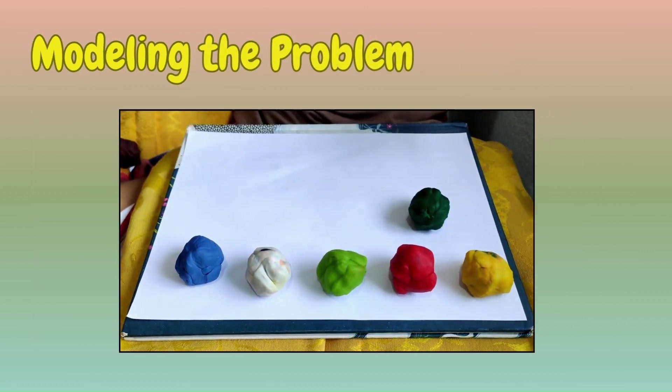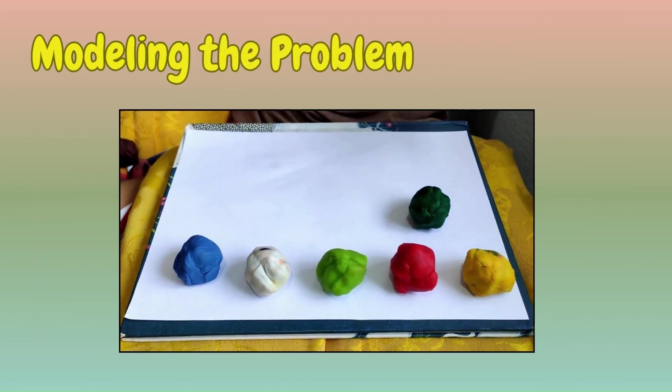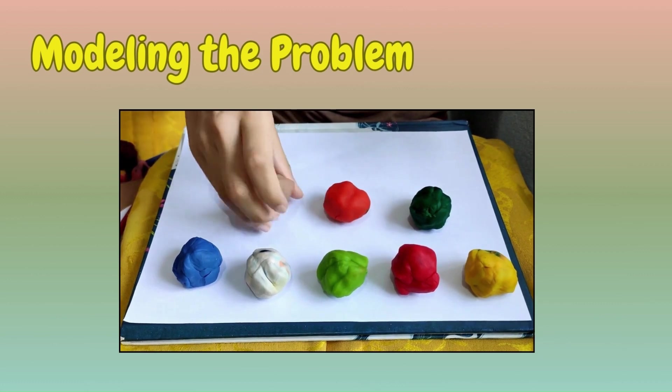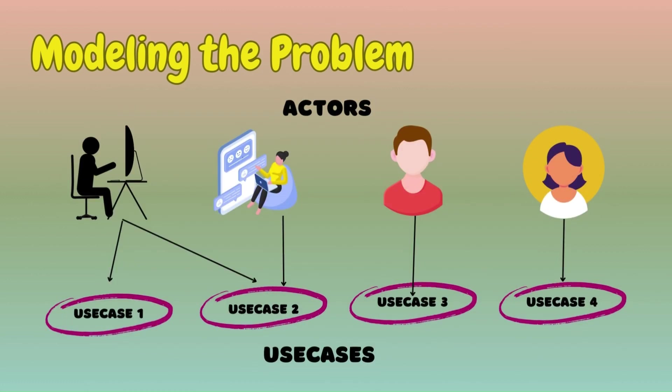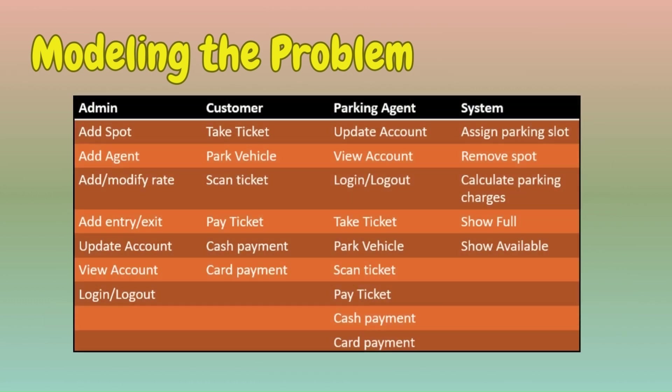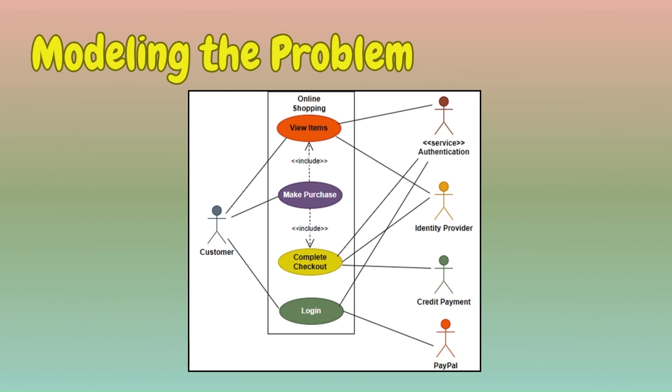The next step is modeling the problem. Here we focus on identifying the various actors and primary use cases of the system. It is required to establish relationships between and among actors and their use cases. We may be asked to draw use case diagrams to visualize system components.